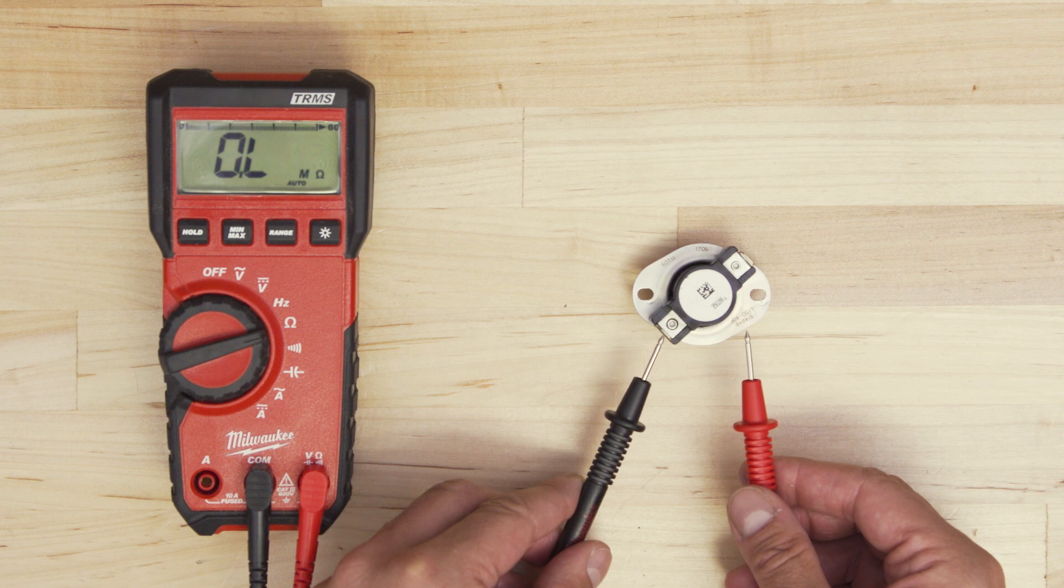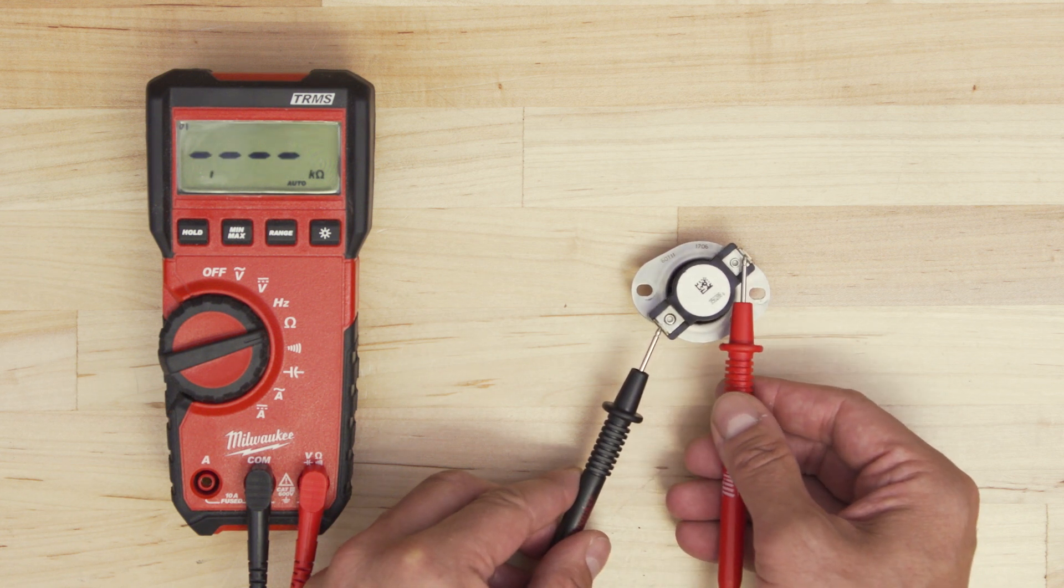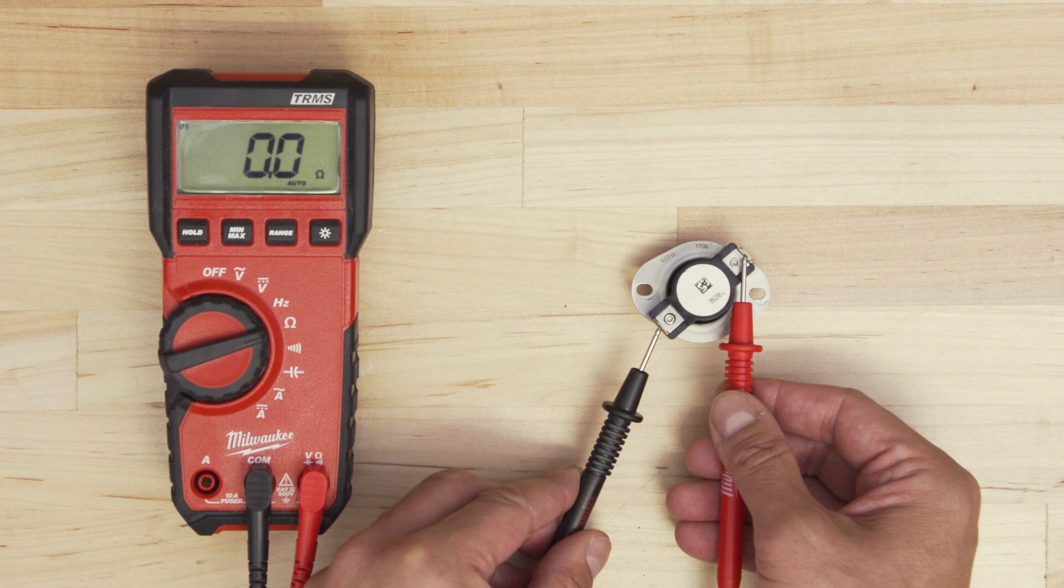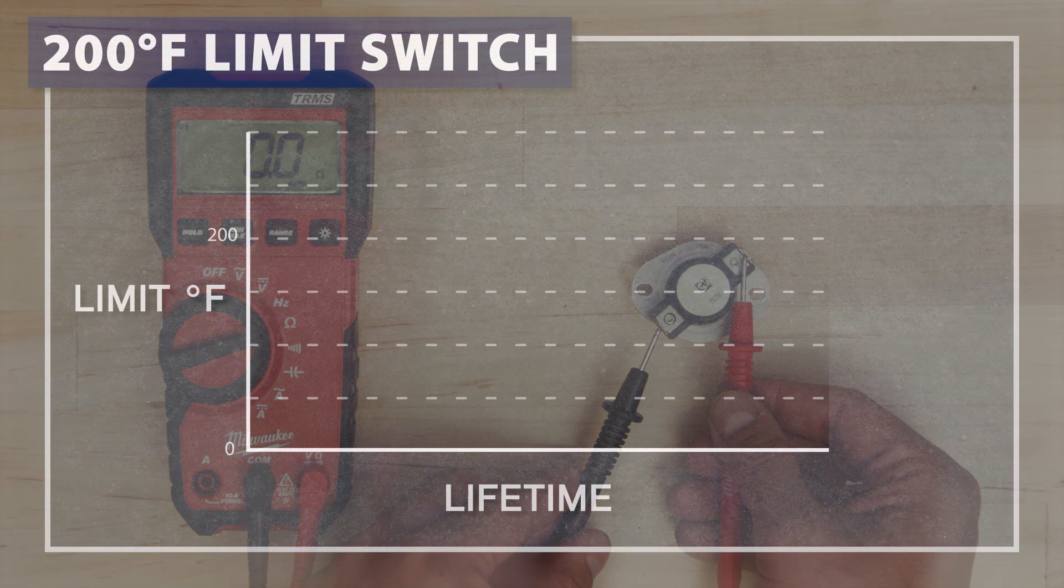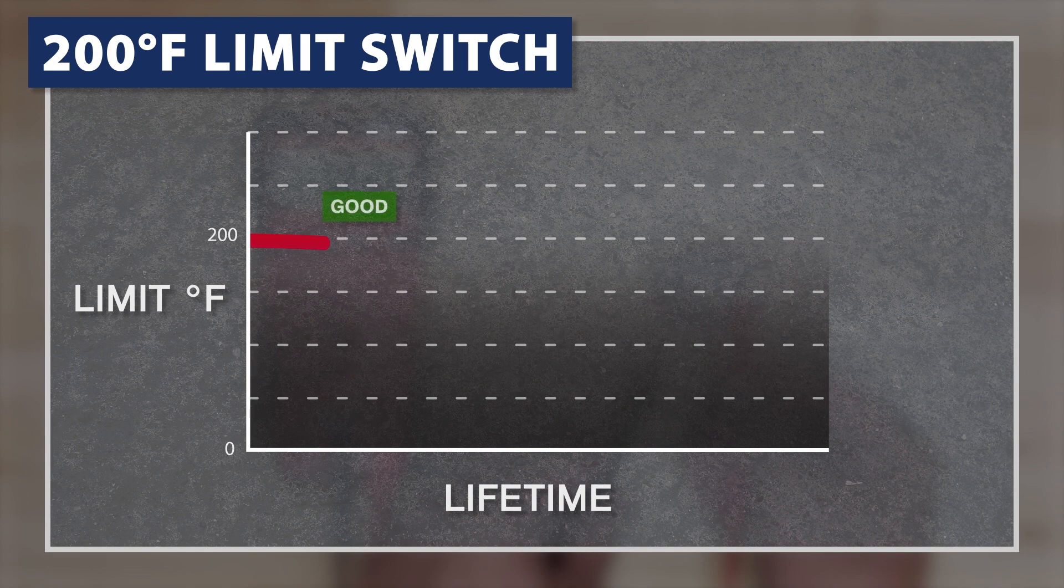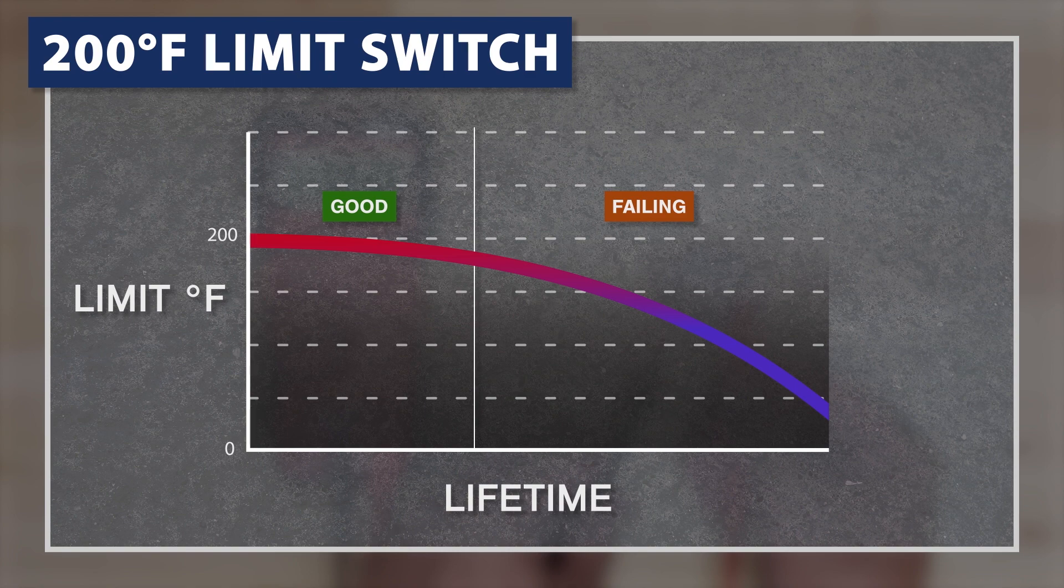Keep in mind that even if a limit switch has continuity, it doesn't mean that it's functioning correctly. As the switch wears down, it can open at lower and lower temperatures, and can cause an appliance to shut off before it fully heats up.